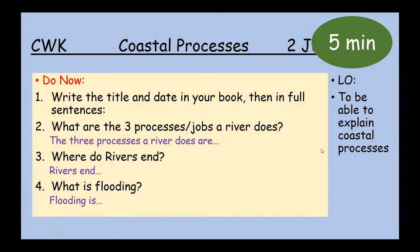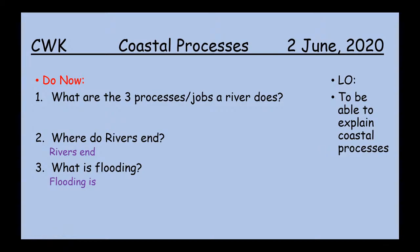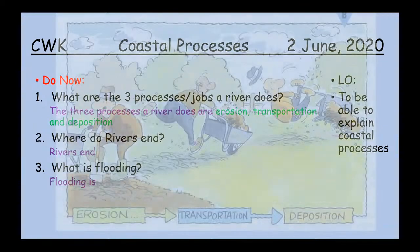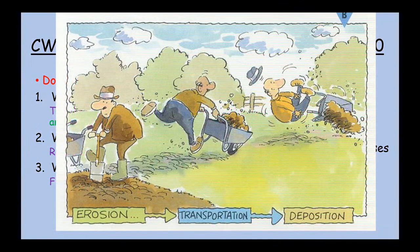Here are the answers to the do-now questions. There are three processes or jobs that a river does, and they are erosion, transportation, and deposition. Please don't correct your answers just yet — listen first. It's quite easy to think of this like somebody doing their gardening. Erosion is somebody digging up the ground, digging up the soil and earth, and in some cases breaking it down into smaller chunks — that's what erosion is, where the river breaks material down.